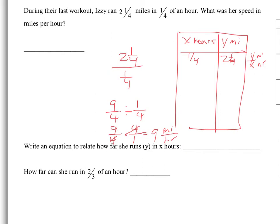So our unit rate, or our constant of proportionality, is nine miles per hour. That allows us to write the equation: Y miles can be traveled nine times X hours.